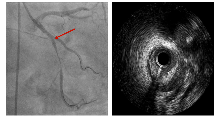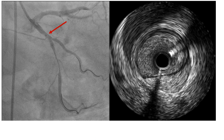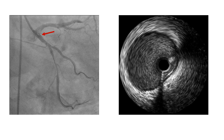Now we are at the level of the proximal bifurcation. This is the main artery with the IVUS catheter and guidewire. This is the OM branch and its wire. Proximal to the bifurcation we can clearly see the hematoma extending proximally. The proximal circumflex is clear of atherosclerosis and clear of any hematoma.